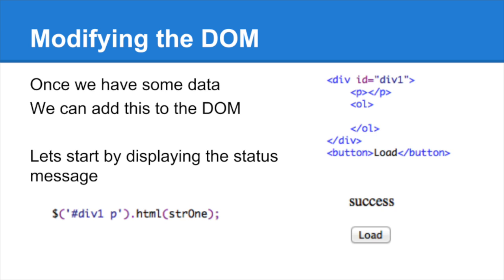Here's the HTML — a p-tag, an ordered list, and a button. Using the selector `#div1 p`, I identify the p-tag under div1, call `.html()`, pass the variable, and it drops straight into the page. You click the button and it magically appears — no page refresh. So we're using what we learned in the first week about the DOM, what we did in the second week about events, and now applying it by extracting variables from the JSON object.